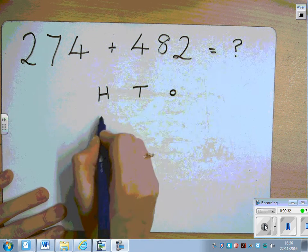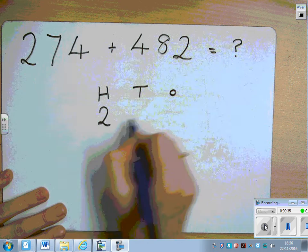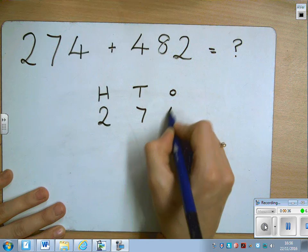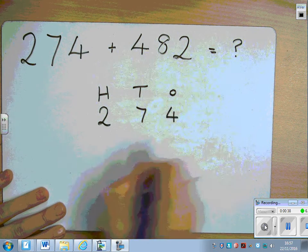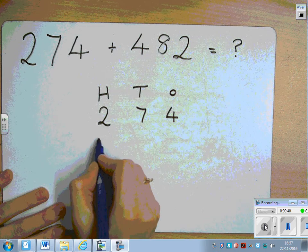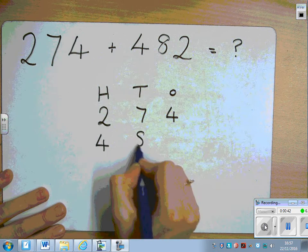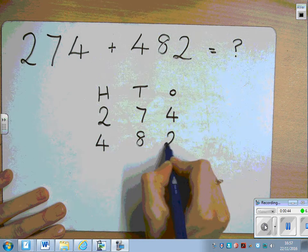In our first number we have two hundreds, seven tens and four ones. And in our second number we have four hundreds, eight tens and two ones. Don't forget the operation.